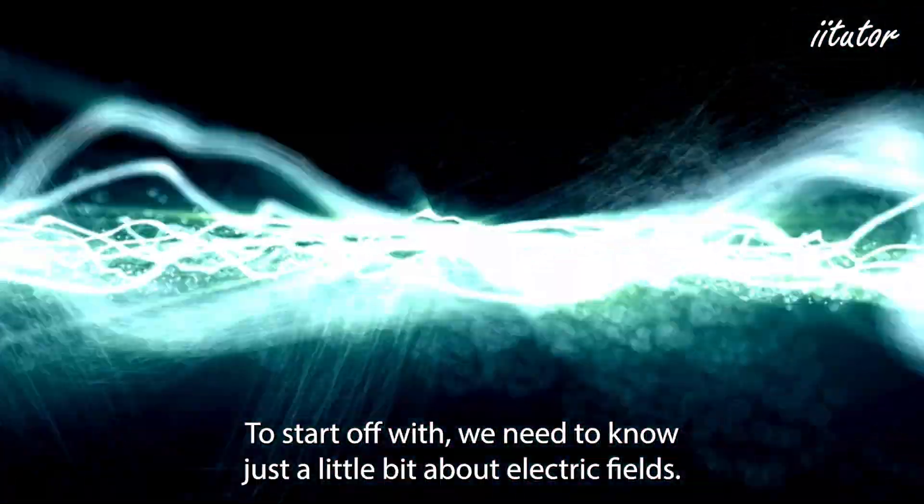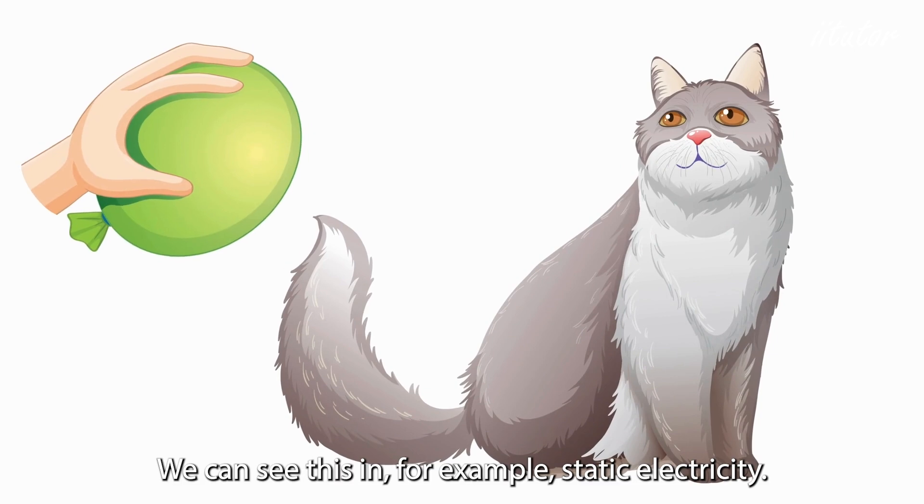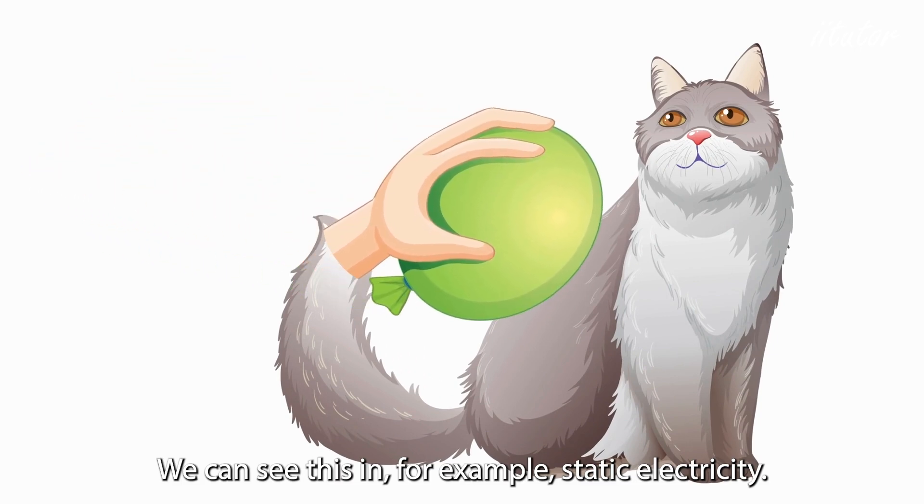To start off with we need to know just a little bit about electric fields. Charged particles like electrons or protons have little electric fields around them, just like a magnet has a magnetic field around it that lets it do things like pick up paper clips.